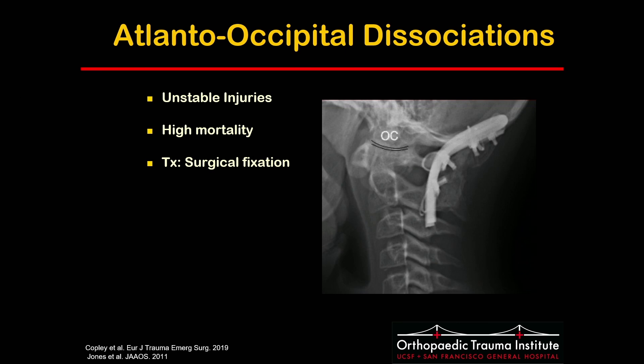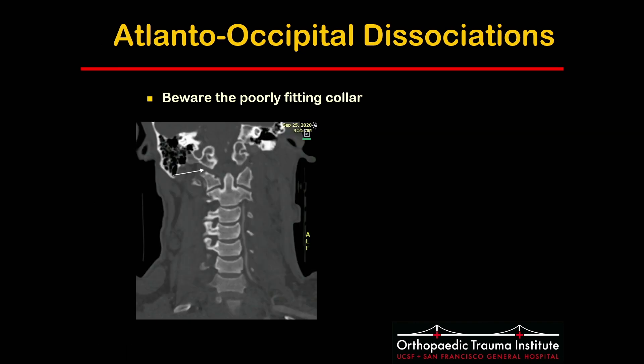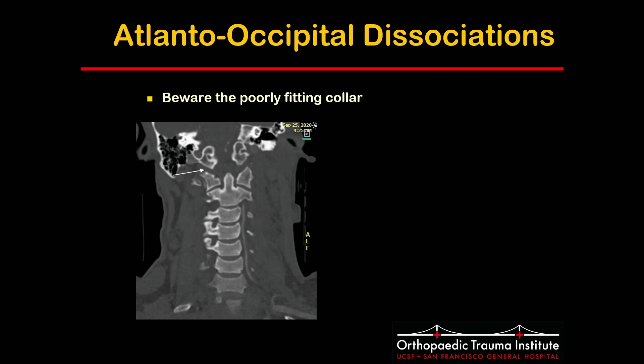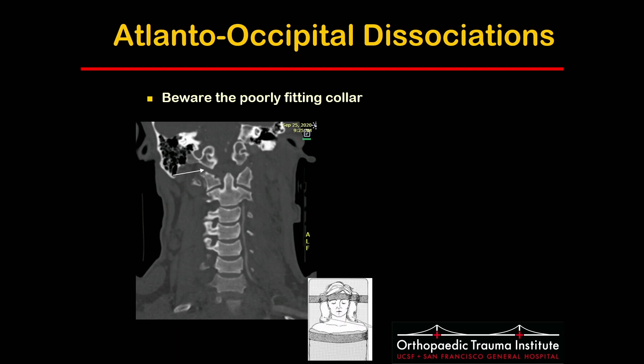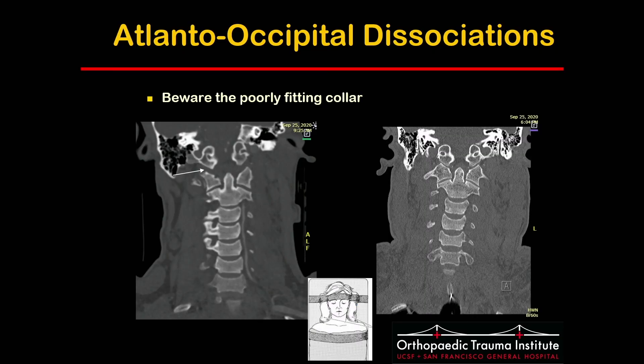These generally require surgical fixation in the form of occipital C2 fusion. Regarding initial management, cervical collars are tricky in occipital-cervical dissociation since collars exhibit a distracting mechanism on the cervical spine. What I prefer to do is use sandbags or IV bags on either side of the head and tape the head to the bed. This avoids distraction across the OC joint. The same patient without a cervical collar showed reduction of the occipital-cervical joint on subsequent CT.